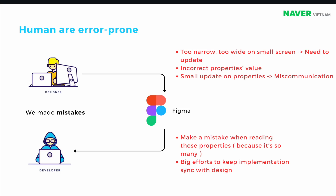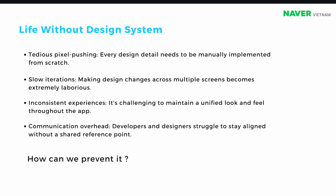Miscommunication happens more often when there are changes from design, and both teams need to spend lots of effort to keep the implementation in sync with the design. Without using design systems, every design detail needs to be implemented from scratch and is hard to reuse. When there is a small change to a component, that change needs to be scaled to every screen where that component is placed. Also, it's hard to maintain consistent looks and feels throughout the app. And finally, there will be communication overhead to keep the implementation in sync with the design.